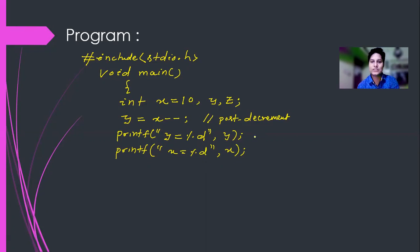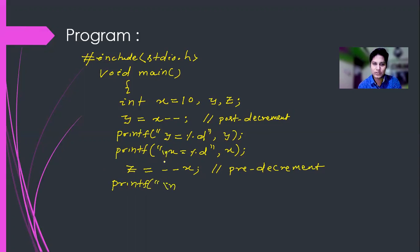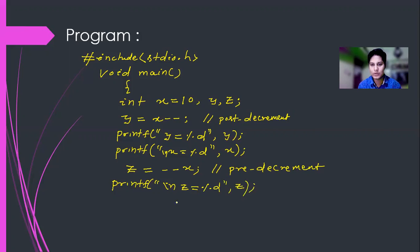This statement will show the value of y and this will show the value of x. In the next statement I'm writing z = --x. This is pre-decrement. It is called pre-decrement because the operator is used before the variable, before the operand. Now I'm using printf to display the value of z, using \n for a new line: printf("\nz = %d", z);